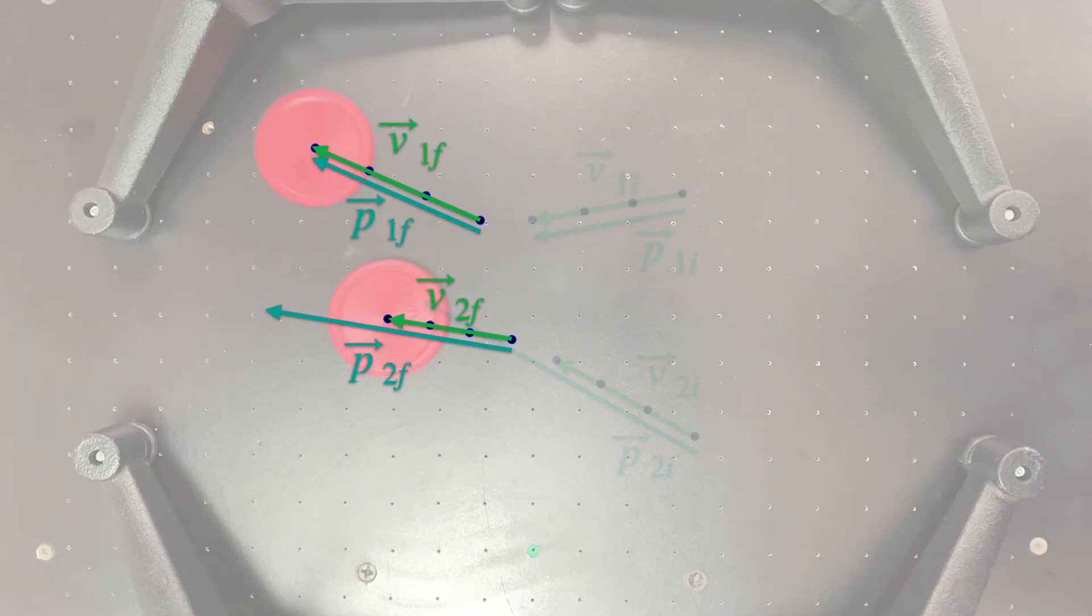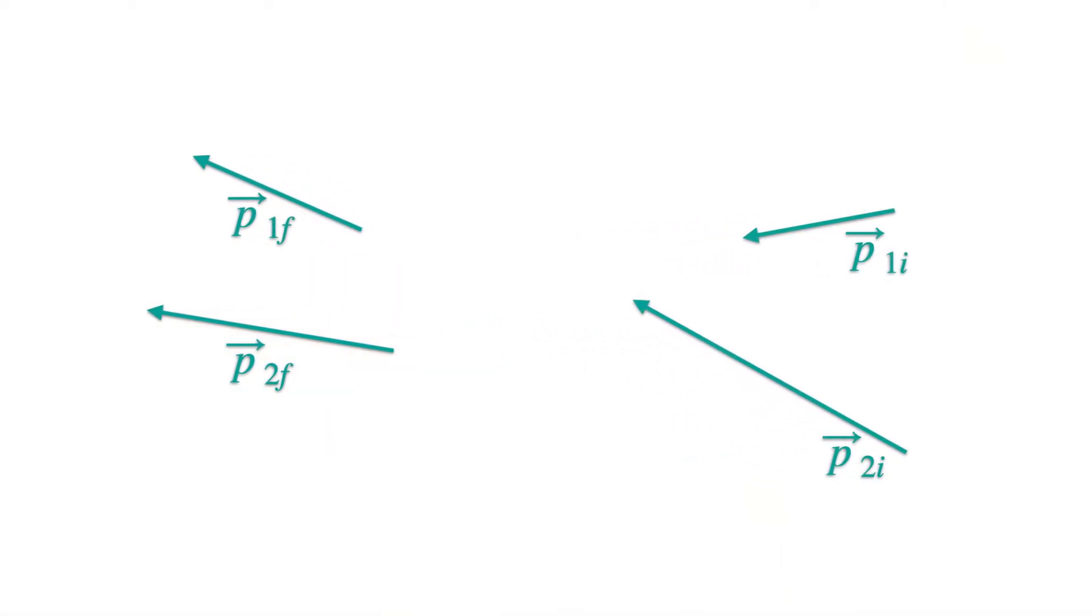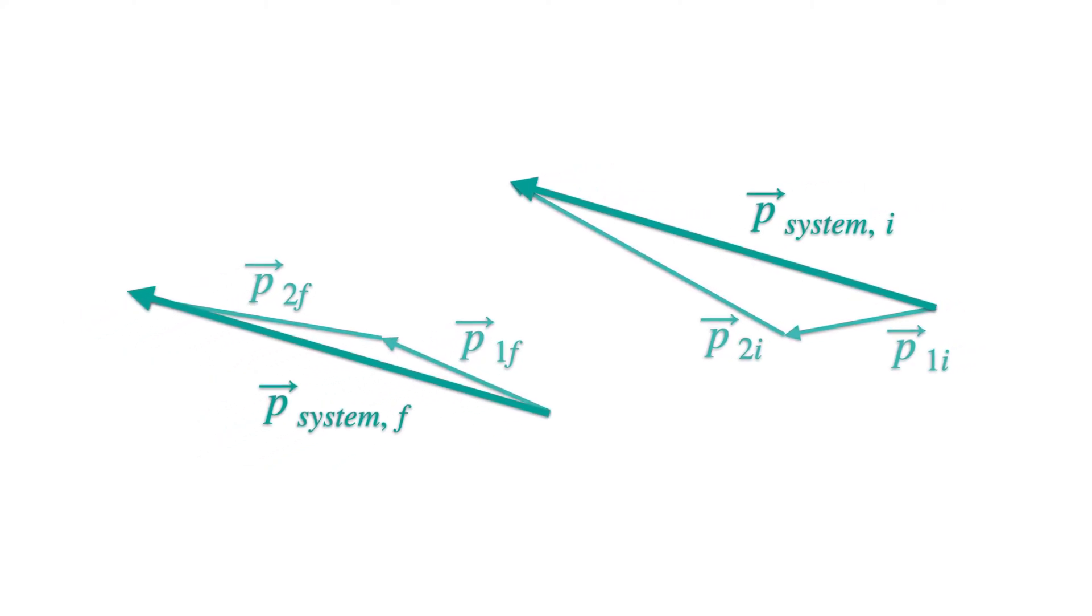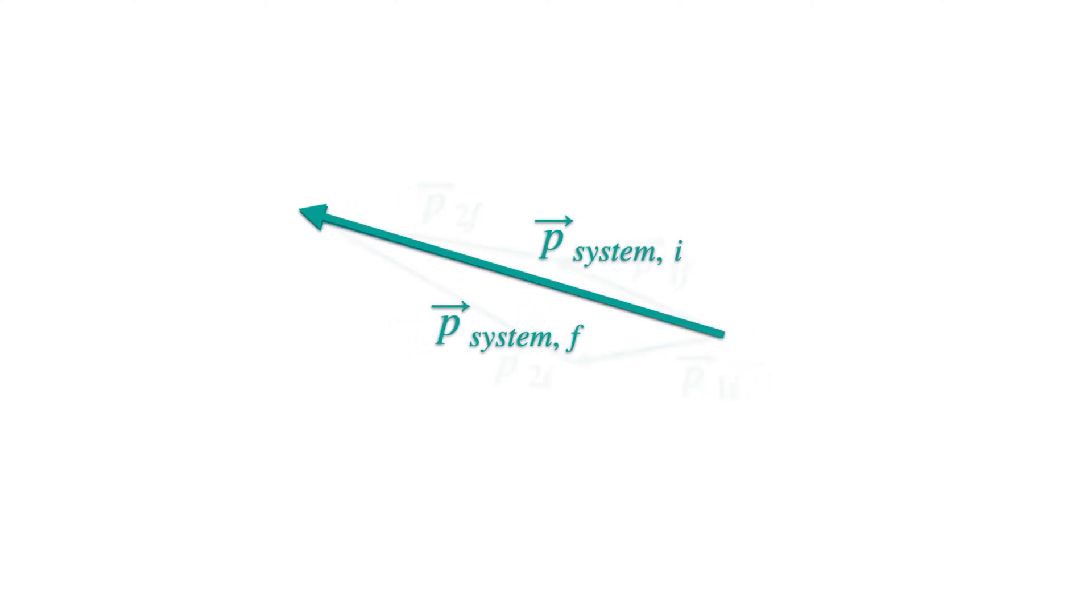Ignore everything except the momentum vectors. Add the vectors as before to find the total momentum before and after the collision. And compare them to again see that the system momentum did not change during the video.